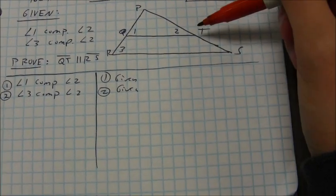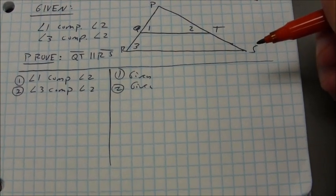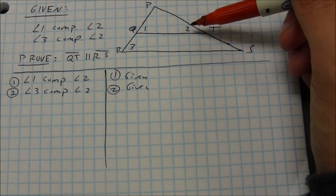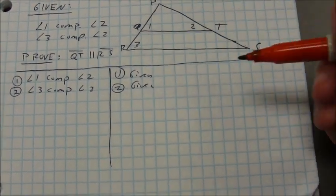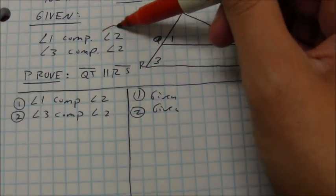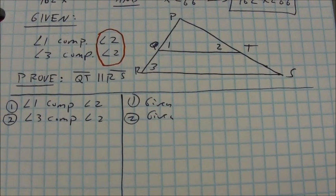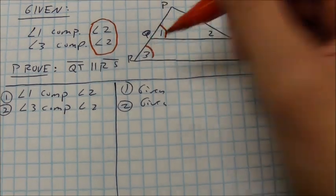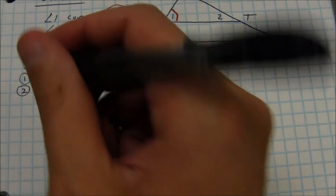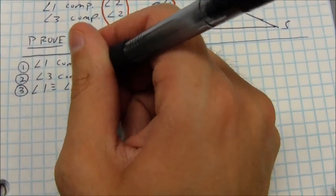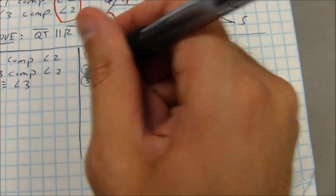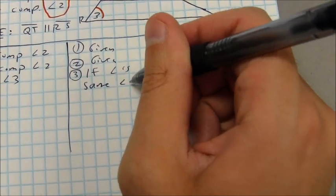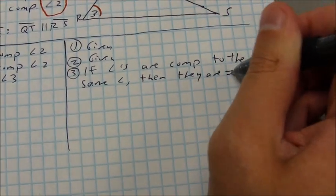This proof gives me a triangle divided up into a smaller triangle, with a line that appears to be parallel to the base — though we're not told that. I'm told that angle 1 and angle 2 are complementary, and angles 3 and 2 are also complementary. Both angle 1 and angle 3 are complementary to the same angle. If angles are complementary to the same angle, they're going to be congruent to each other. So angle 1 is congruent to angle 3.